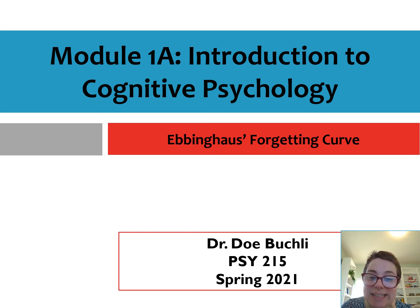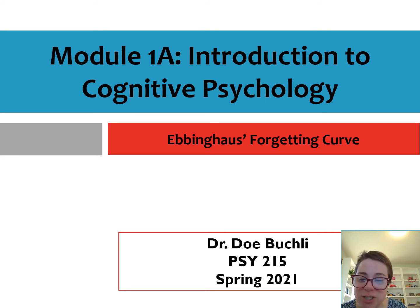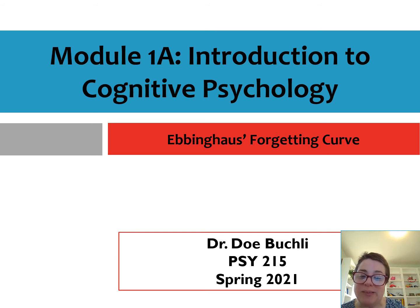Welcome. This is the next video in our series looking at Module 1A, which is going to provide a review of the Introduction to Cognitive Psychology chapter in your text. For this particular video, we're going to be looking at the work of Ebbinghaus and his Forgetting Curve.